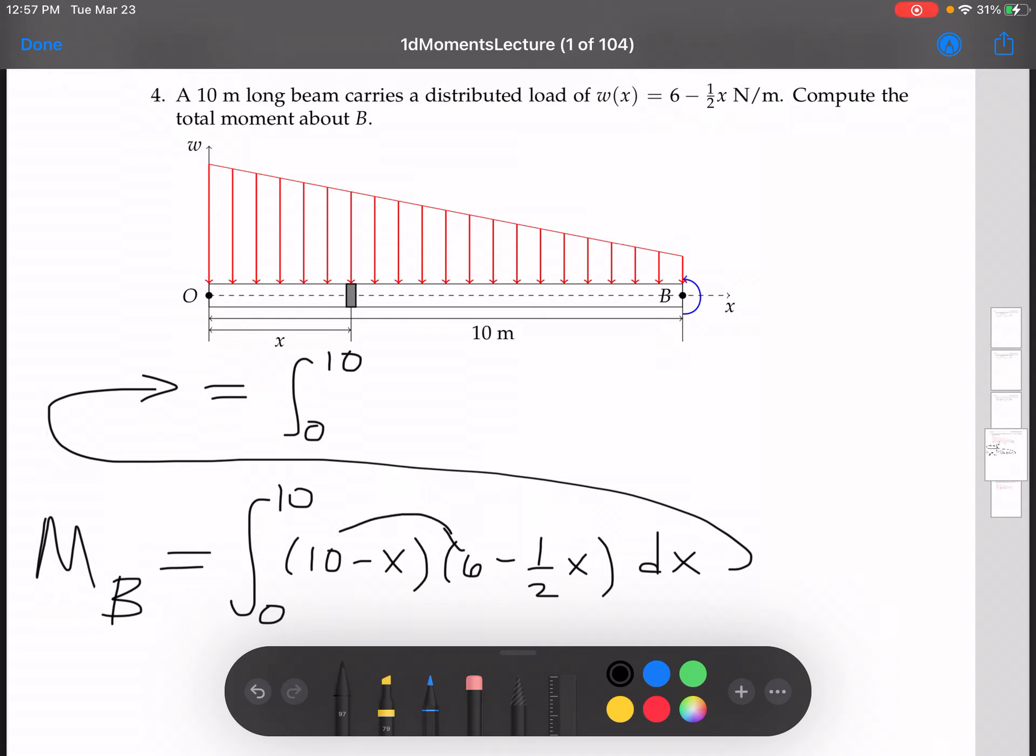Distributing this 10 to the 6 and the negative 1 half X, we get 60 minus 5X. Distributing this negative X to 6 and negative 1 half X, we get minus 6X and plus 1 half X squared, DX. Notice that negative 5X and negative 6X, we can combine like terms, we get negative 11X there.